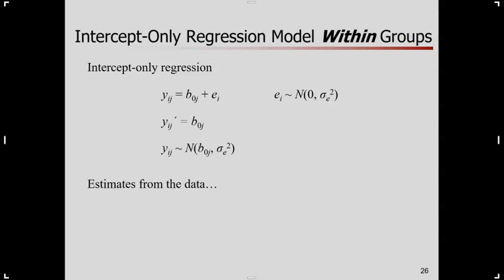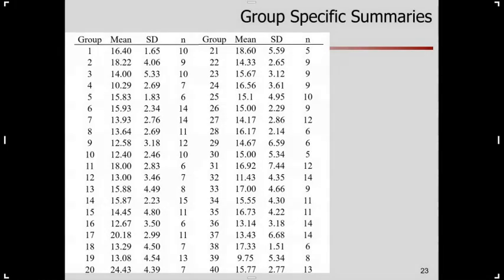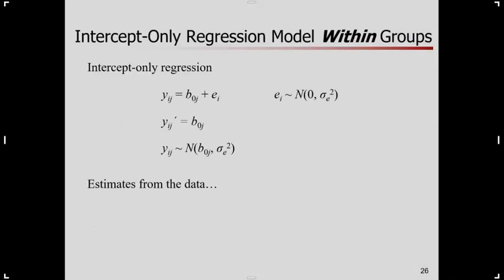I still want to fit an intercept-only model. I got no predictors, but I want the things, I want my scores or I want my parameters to vary by group. Let's look at the structure. I got scores for person i who's a member of group j. In a regression equation, formulation is equal to B sub 0 as an intercept, now also indexed by j. Just like a moment ago, we said we got a particular mean for each group.